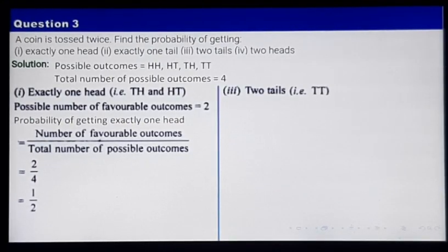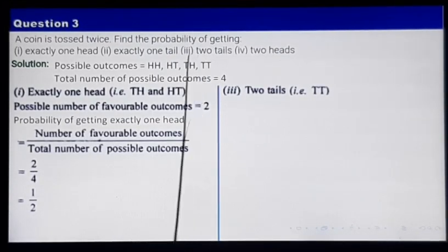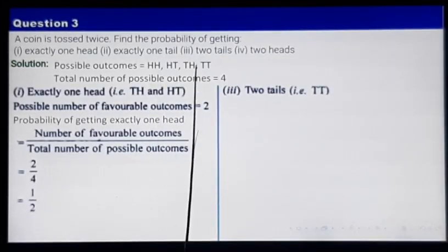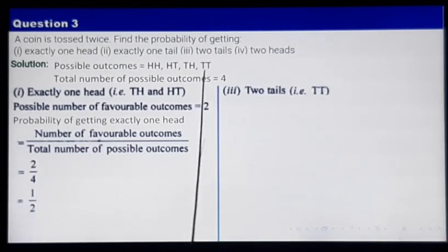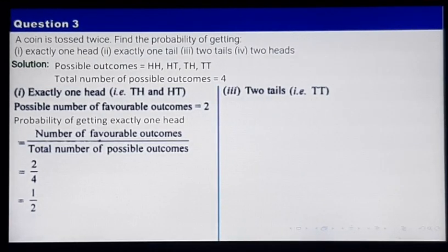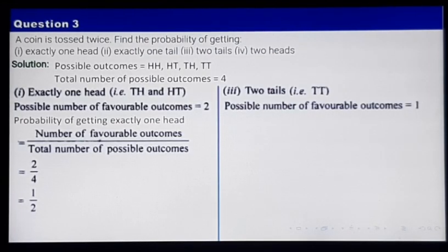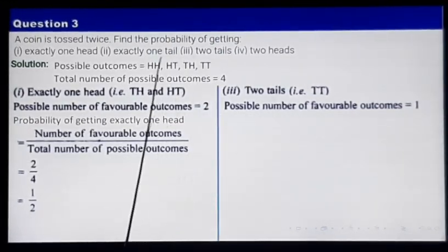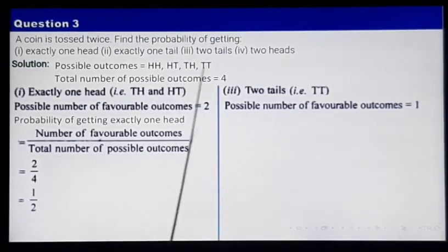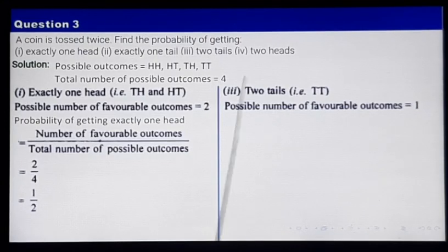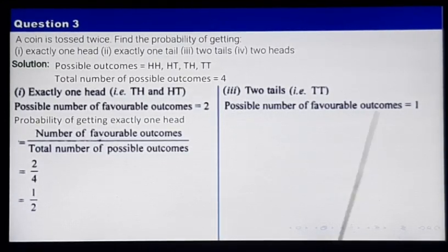Let me take question number 3. In this case, we need to get 2 tails. Out of these outcomes, we are getting 2 tails only in TT — getting 2 tails means getting T and T. The favorable number of outcomes is only 1; out of these 4, only in 1 case we are getting 2 tails.